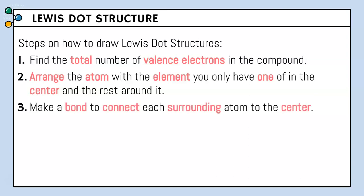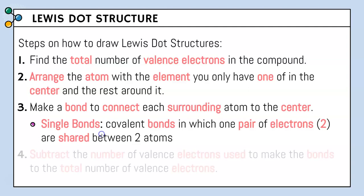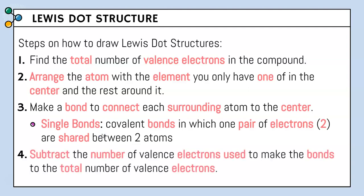Number three, we're going to make a bond to connect each surrounding atom to the center. This bond is called a single bond — a covalent bond in which one pair of electrons, so two electrons, are shared between two atoms, meaning one bond equals two valence electrons. Step number four, we're going to subtract the number of valence electrons used to make the bonds from the total number of valence electrons.